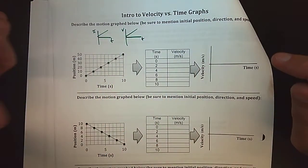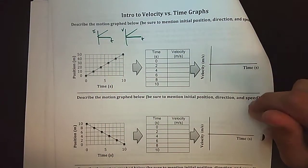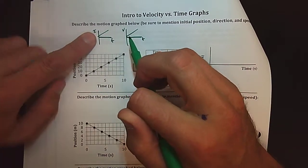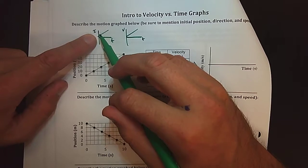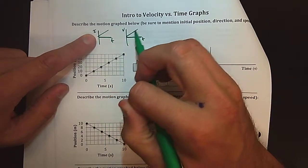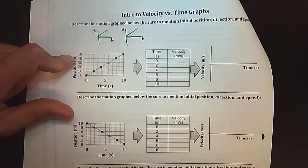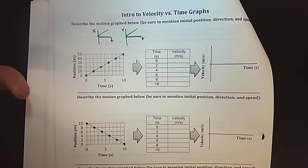The shape on both of these graphs is exactly the same but these are telling two completely different stories. The motion of this object is not the same as the motion of this object because we have different y-axes.